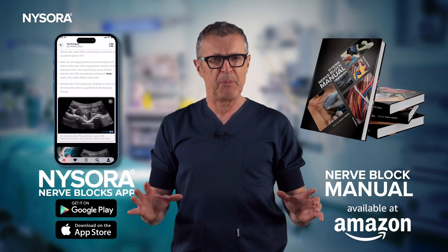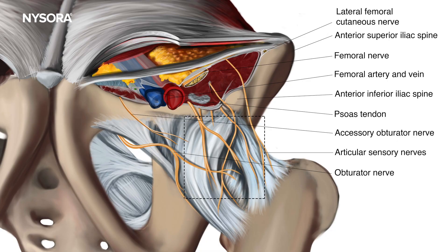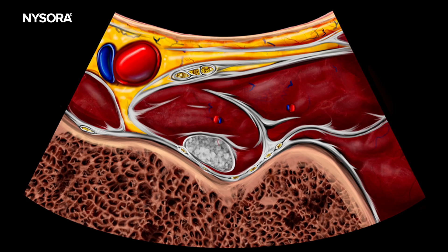The essence of the PENG block technique lies in its ability to anesthetize the articular branches of the femoral nerve. These branches are situated between the periosteum of the pelvic ramus and underneath the fascia of the iliacus muscle. To achieve effective analgesia, a local anesthetic is injected precisely at this location.